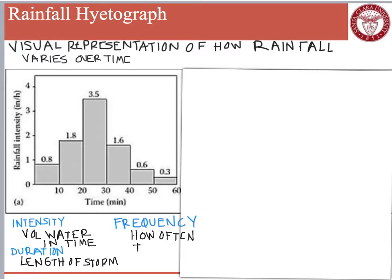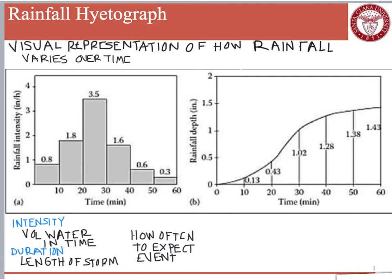This storm, if you add it up — the one shown above — has a total of 1.43 inches of water. It would be helpful to know how often we would get a storm of that intensity. Another way to visualize this hyetograph is to look at what is called a cumulative rainfall hyetograph.